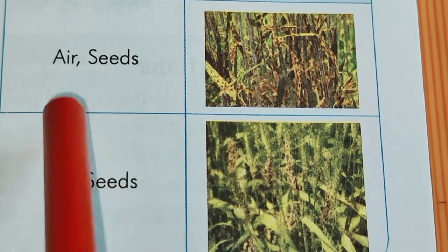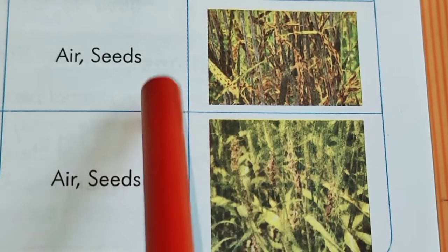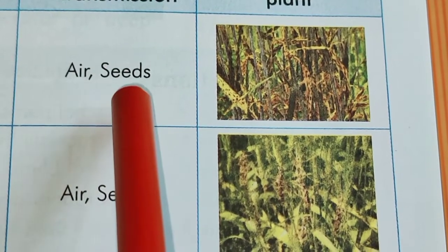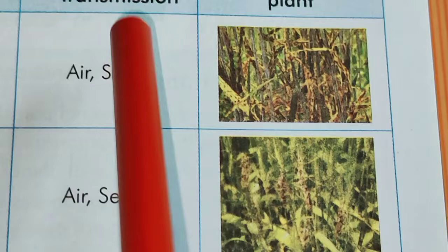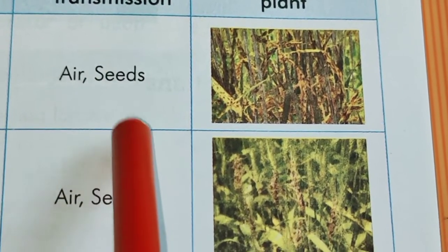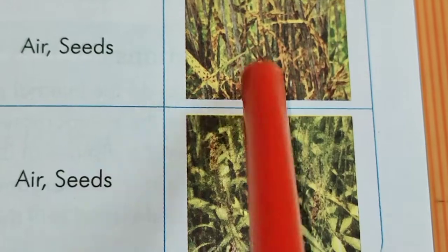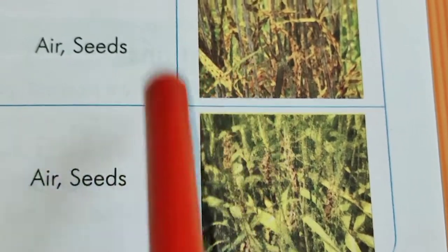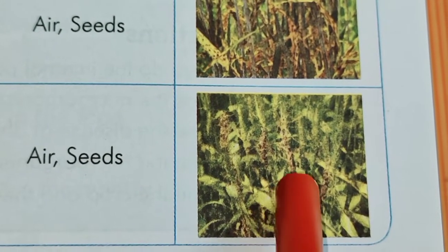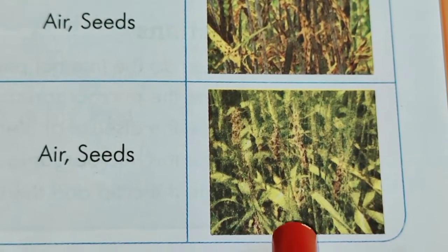Because these are cereals, infected plants give less productivity and less yield. These diseases spread easily through air and through infected or diseased seeds. Therefore, treatment of seeds before sowing, called seed treatment, is very important. Due to rust, brown-colored lesions or spots appear on the leaves, and smut also shows very clearly visible symptoms on the surface.